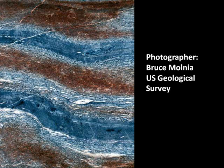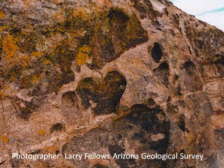Gneiss is formed from a schist and often shows compositional banding as minerals become segregated. This gneiss, in Alaska's Fairweather Mountains, exhibits typical gneissic structure. Tafoni are small indentations formed by weathering. Here they show in Catalina gneiss.